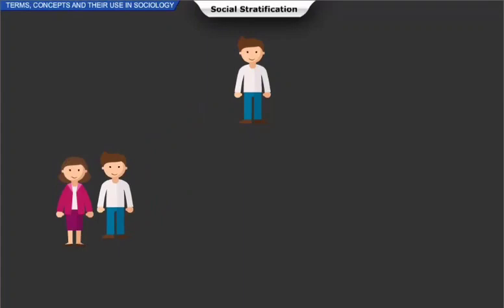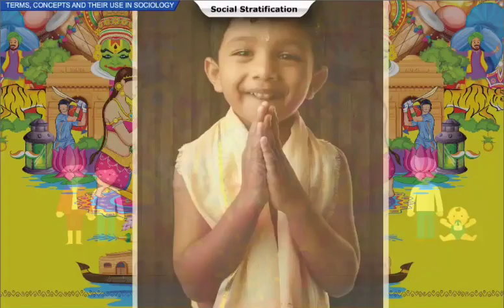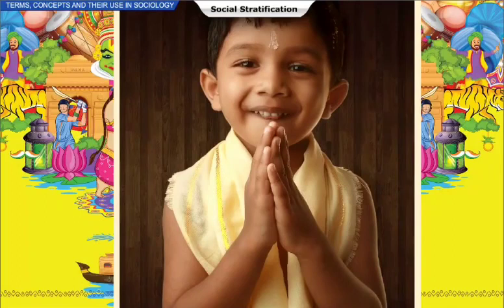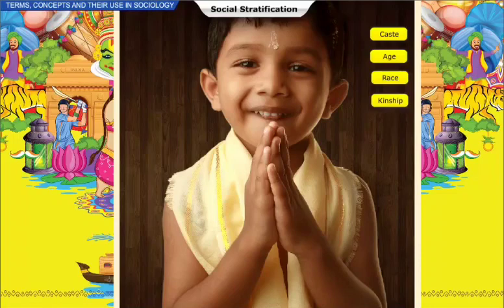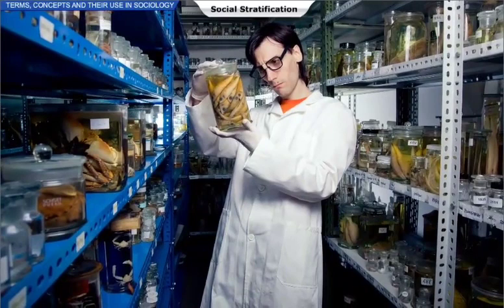Traditional societies are composed of statuses assigned to an individual by birth, such as caste, age, race, and kinship. Modern societies are characterized by statuses that an individual accomplishes through his or her own hard work, for example educational qualification. These achieved statuses are accompanied by prestige, which refers to the value accorded to a social position without considering its economic aspect.